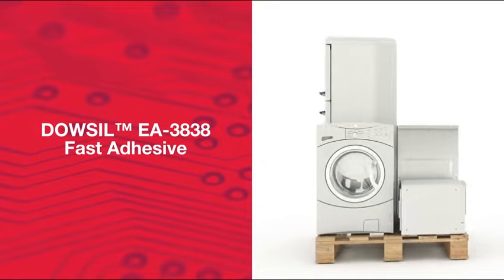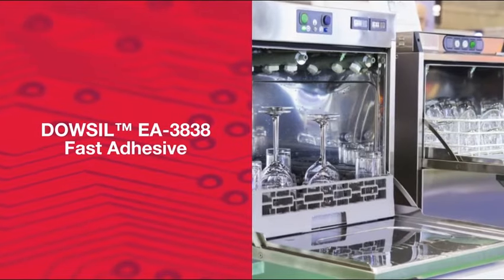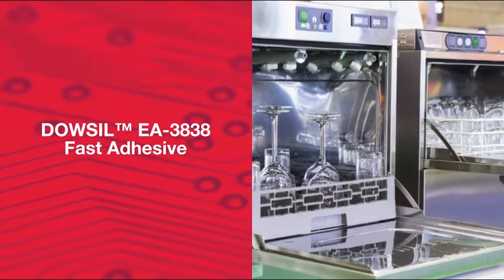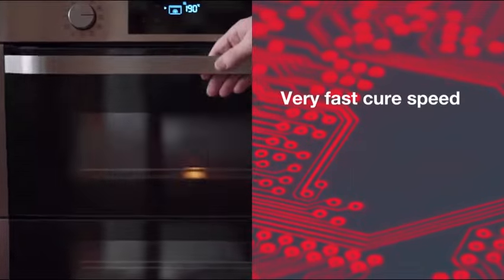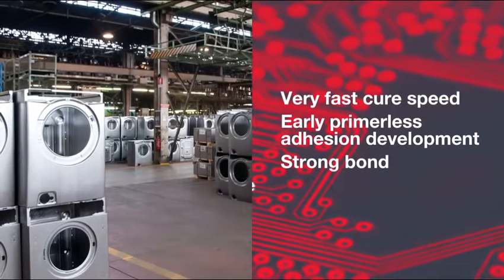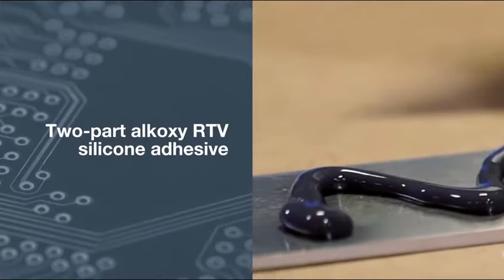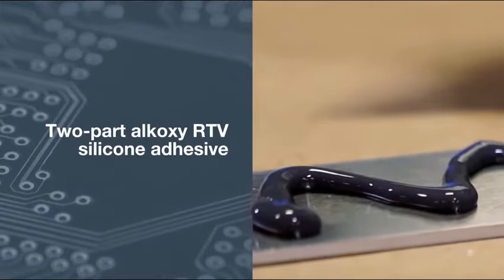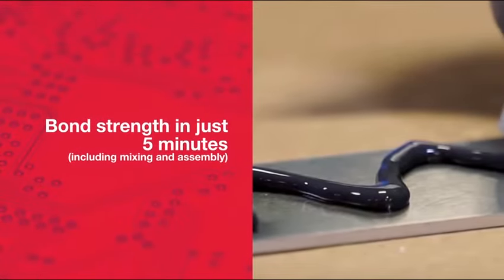This adhesive is designed for appliance manufacturing applications that need very fast cure speed and early primerless adhesion development bond strength with room temperature cure. This two-part alcoxy RTV silicone adhesive provides bond strength in just five minutes for faster processing and greater productivity for appliance manufacturers.